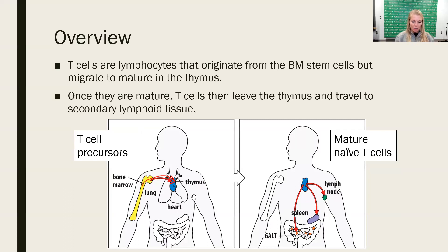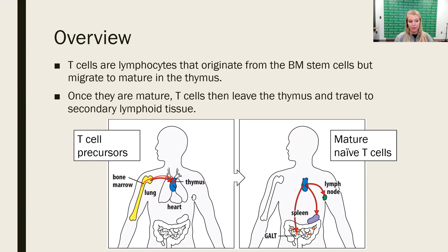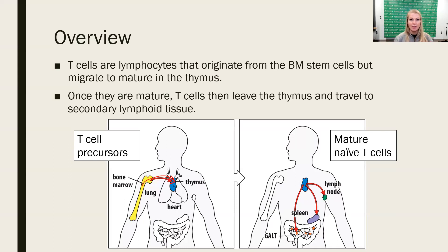T cells are lymphocytes. Just like any other lymphocyte or blood cell, they're going to be created from the hematopoietic stem cell in the bone marrow. They originate from the bone marrow, but at a very early immature point of development, they leave the bone marrow and move to the thymus to mature. That's when their T cell receptors are made and when they get their antigen specificity and become mature T cells. When a T cell becomes mature, it leaves the thymus and moves out into the secondary lymphoid tissue to look for infection.